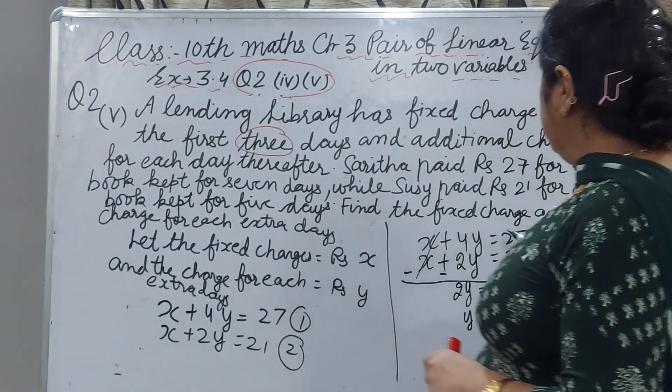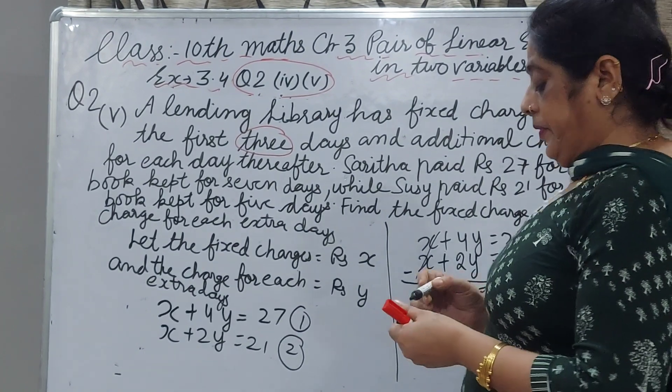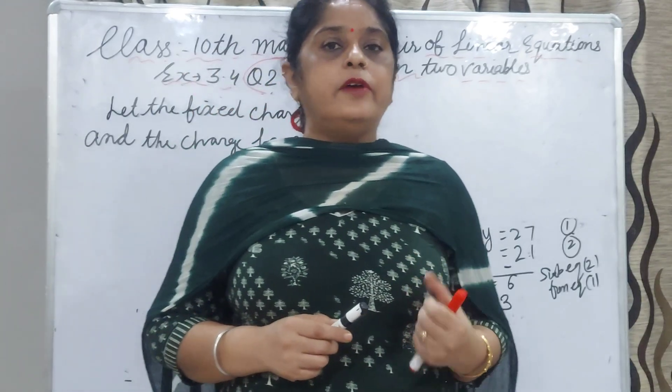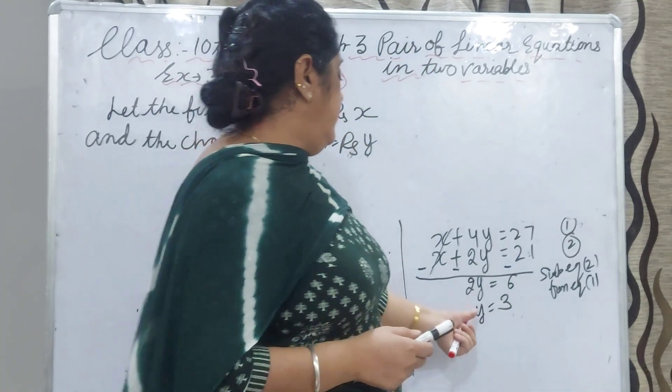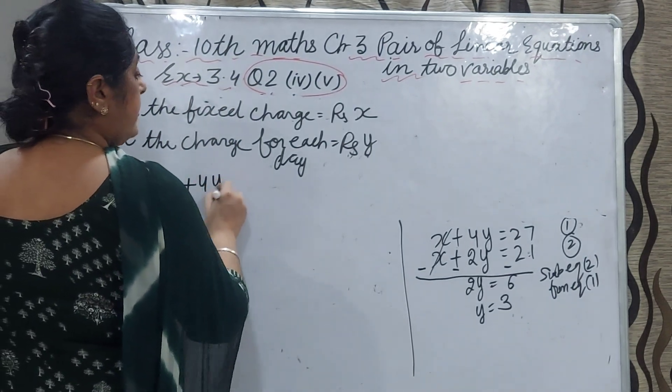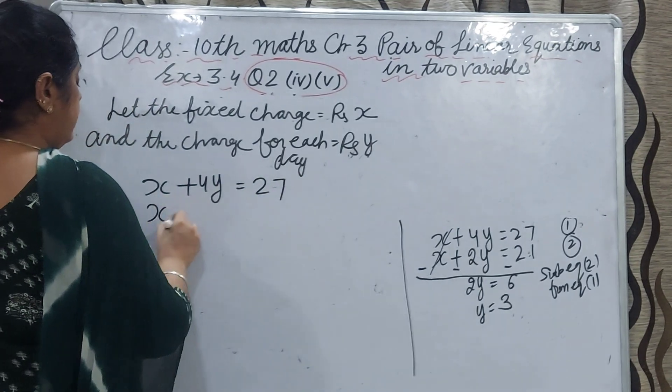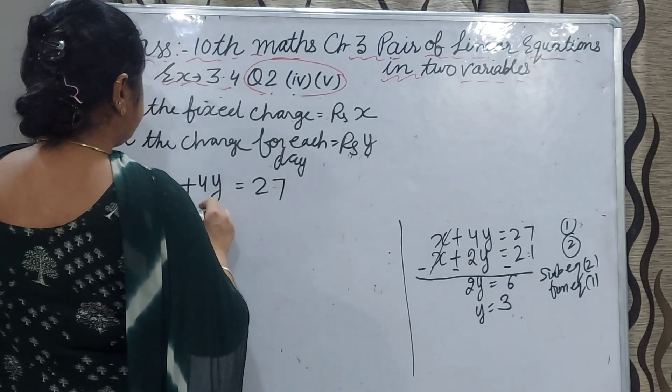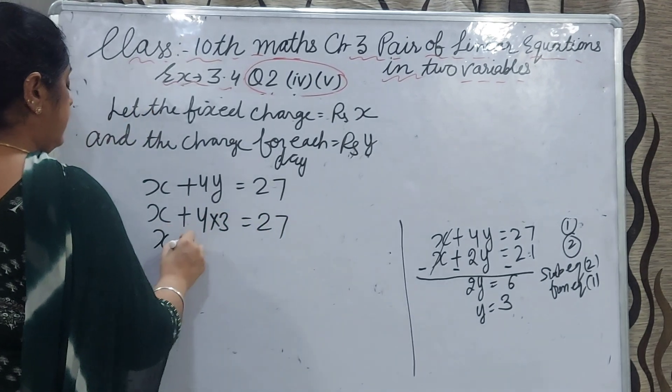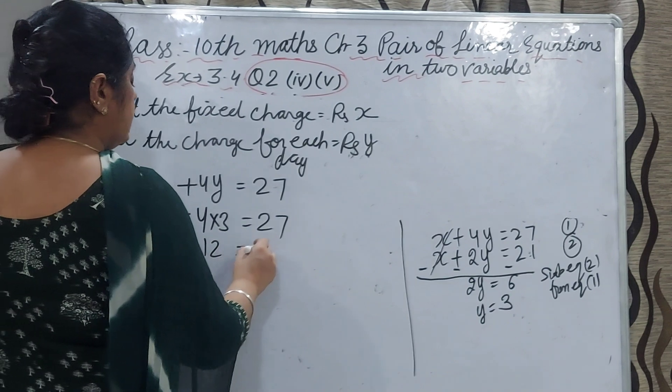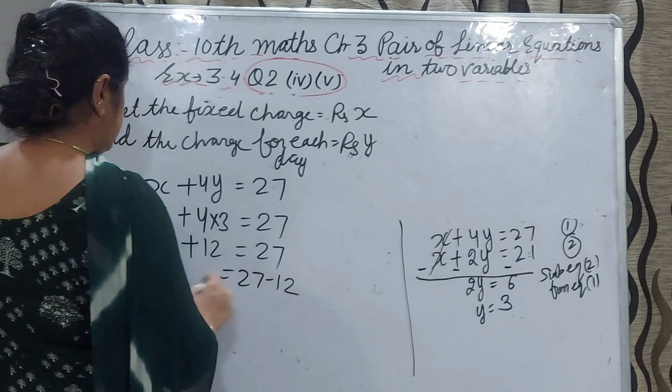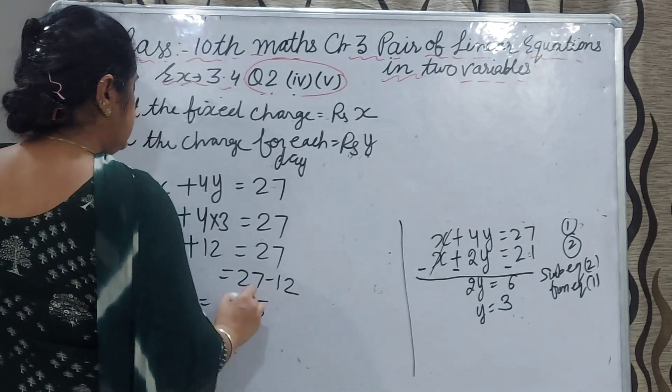Now, any equation, either 1 or either 2, you put the value and then you will get the value of x. We will put the value of y in equation 1. x plus 4y equal to 27. x plus 4 into 3 equal to 27. x plus 12, x equal to 27 minus 12, x is 15.